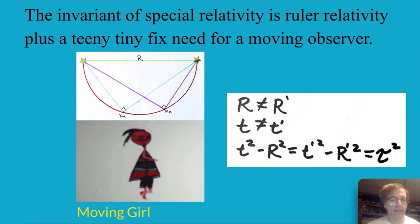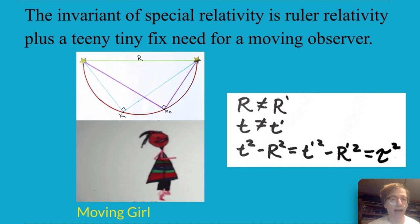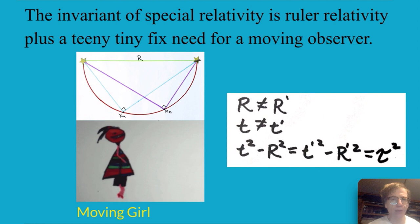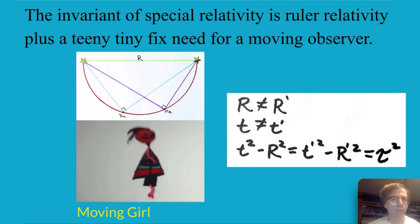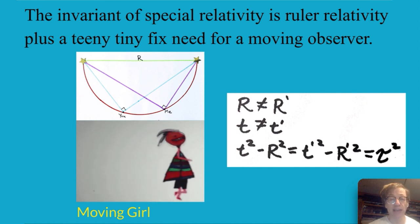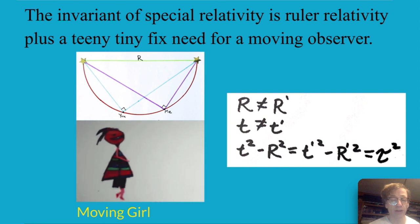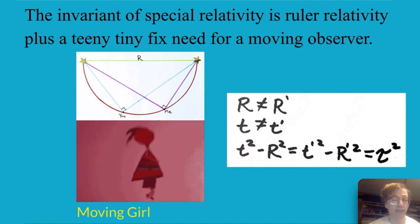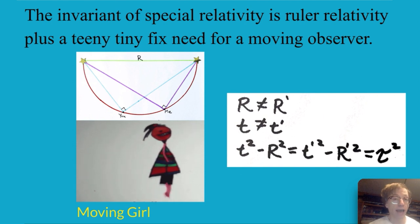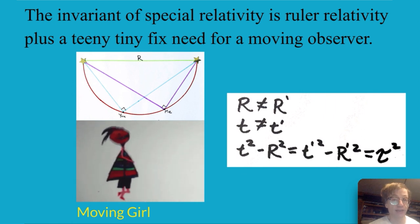Now the invariant of special relativity which takes into account people who are moving at constant velocities is really just ruler relativity and a teeny weeny fix needed for a moving observer. So for that moving girl her measurement of R is not going to be the same as ours. We have to now use events instead of just those points in space and the times are not going to be the same but the square of time minus the square of the distance, that's going to be exactly the same. That's what's called the Lorentz invariant interval.